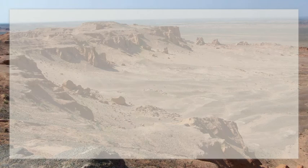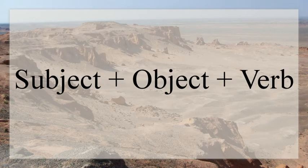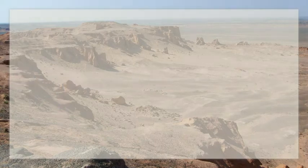Mongolian follows the basic sentence structure subject plus object plus verb, and these pronouns are primarily used in the subject place. For example: